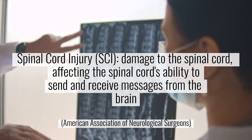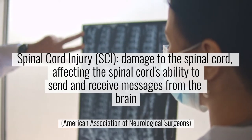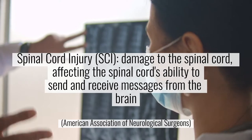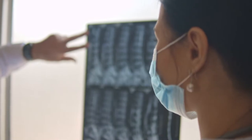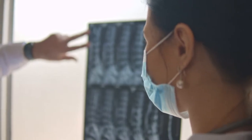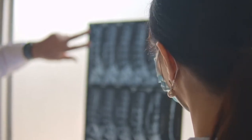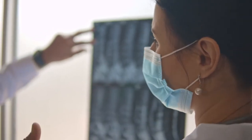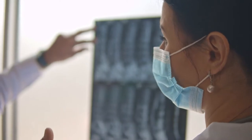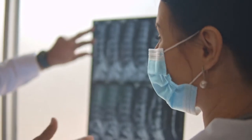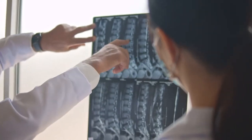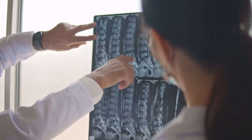The location of the injury on the spinal cord will determine what parts of the body will be impacted. This is because an individual will lose functioning or control of muscles and organs controlled by the spinal cord at the level of their injury and below.